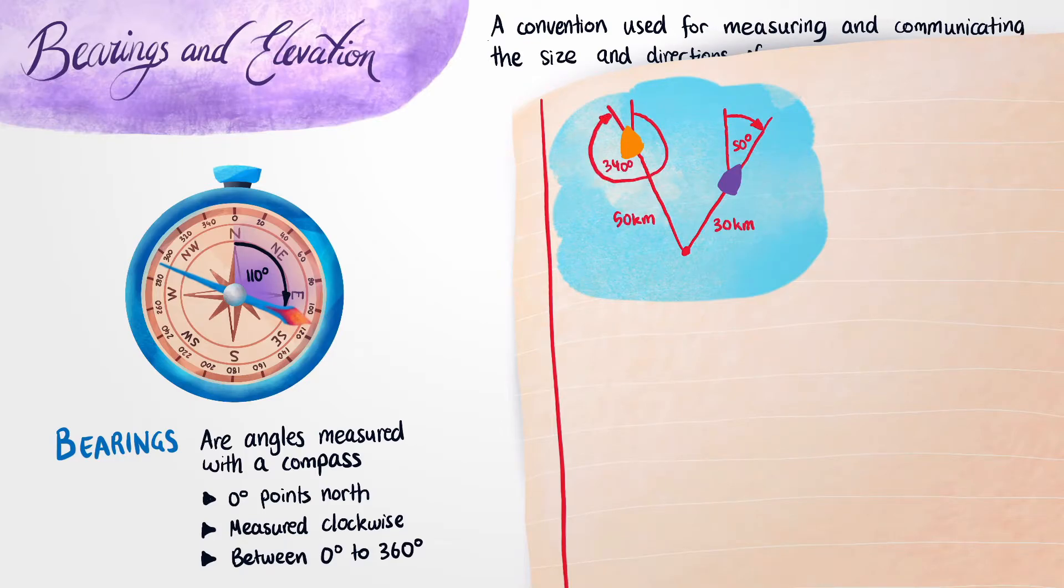Now suppose that the captain on the right decides that they want to turn their boat to drive to the captain on the left. In order to make it to the other boat, we'd actually need to find the new bearing of the captain's boat as well as the distance that they'd need to travel. Now the first thing to do would be to simplify the situation so it's a little bit easier to solve.